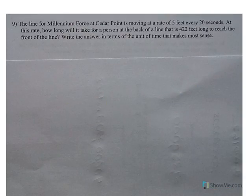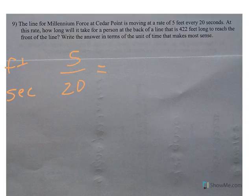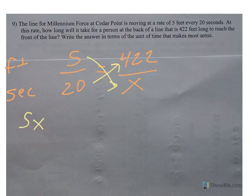Number 9, the line at Millennium Force at Cedar Point is moving at a rate of 5 feet every 20 seconds. At this rate, how long will it take for somebody at the back of the line to move 422 feet? So when I cross multiply, I get 5x equals 8,440.